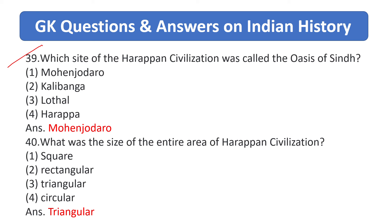Which site of Harappa civilization was called the 'oasis of Sind'? Answer is Mohenjo-daro. What was the shape of the entire Harappan civilization? Answer is triangular.